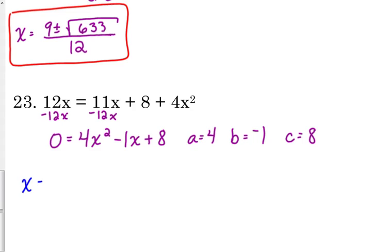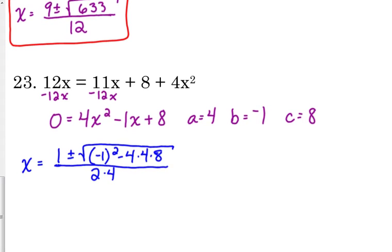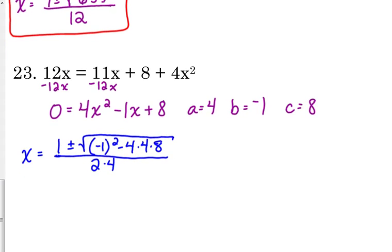So quadratic formula. X equals change the sign of B, so it was negative 1 so it becomes positive 1, plus or minus the square root of B squared minus 4 times A which is 4 times C which is 8, all over 2 times A. Now you've got to keep that 1 there in front. You can't just drop it because it's a 1. You have to keep it.